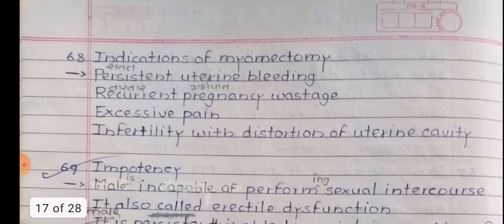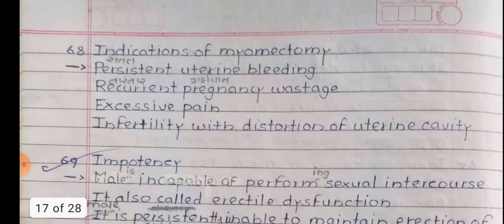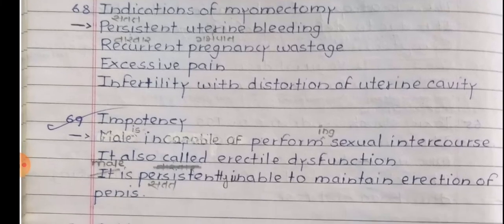Indications of myomectomy: persistent uterine bleeding, recurrent pregnancy wastage, excessive pain, and infertility with distortion of the uterine cavity.